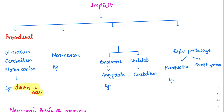Initially, driving will be an explicit memory. But once you learn it, it becomes an implicit memory — you need very little awareness to conduct it. Procedural memory is involved in the striatum, cerebellum, and motor cortex. The motor cortex learns the procedure, the cerebellum corrects it, and striatum is also involved. That is why lesions of these areas cause motor disorders.